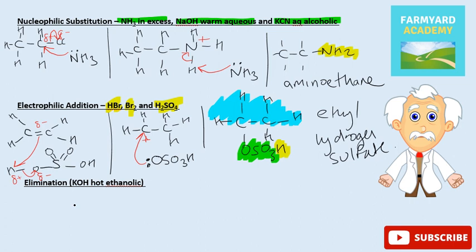Final mechanism we're going to look at in this video. Obviously, we'll finish them off in other videos, but for this video, we're going to look at elimination. Again, slightly different conditions than substitution. You're looking for potassium hydroxide, hot ethanolic. Again, it's with a haloalkane, but it's just different conditions.